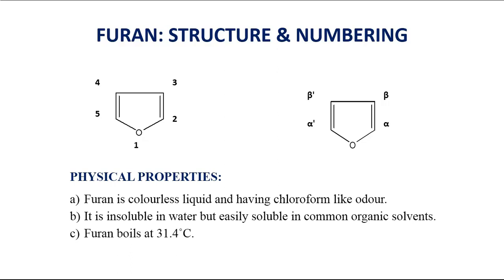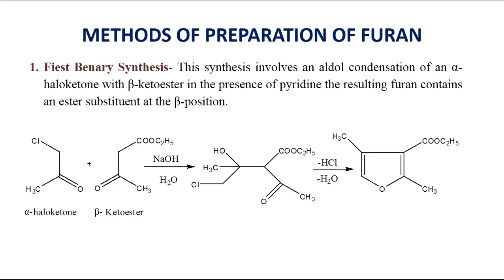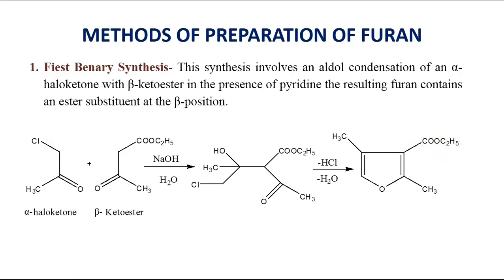Now let us see the various methods used for preparation of furan. The first method is the Feist-Benary synthesis, which involves aldol condensation of an alpha-haloketone with a beta-ketoester. In the reaction, the alpha-haloketone reacts with the beta-ketoester in the presence of pyridine, and we get a substituted furan containing an ester substituent at the beta position.